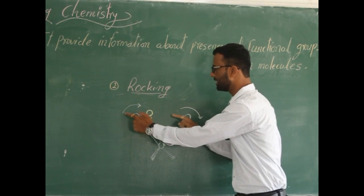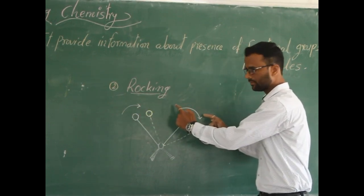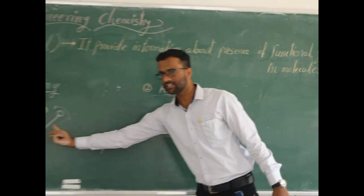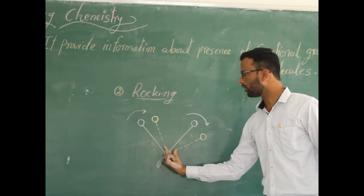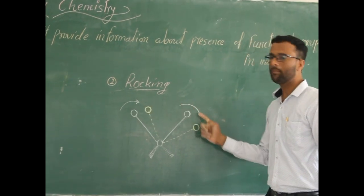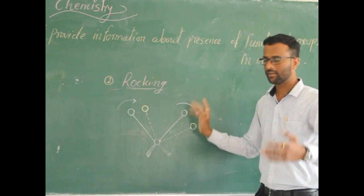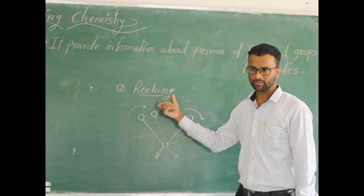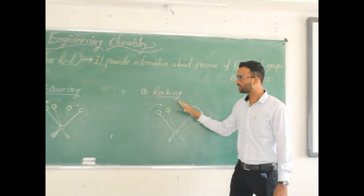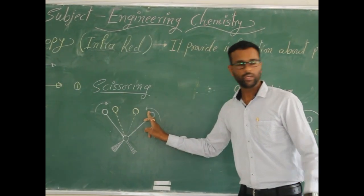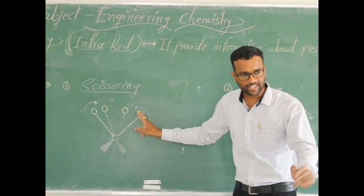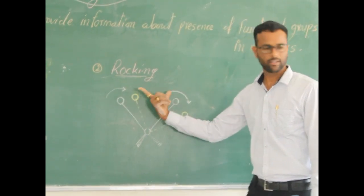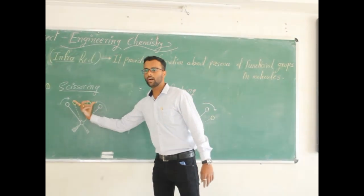In rocking, bond angle remains constant because atoms are moving in the same direction. Think of a rocking chair — forward, backward, forward, backward. Try to understand the difference: in scissoring, atoms move in opposite directions and bond angle decreases. In rocking, movement of atoms is in the same direction and bond angle remains constant.